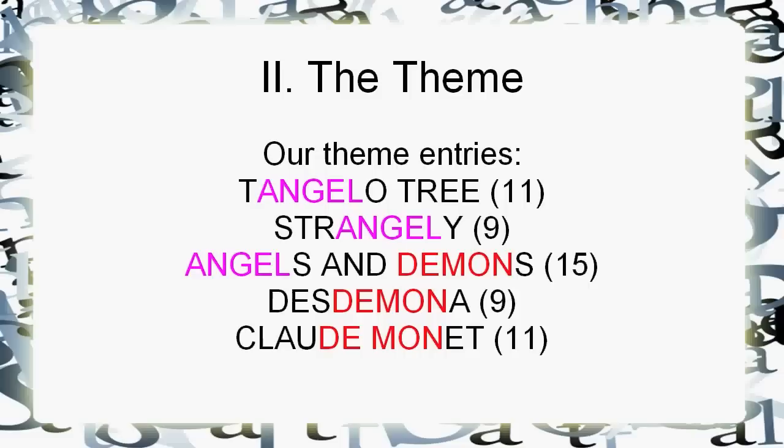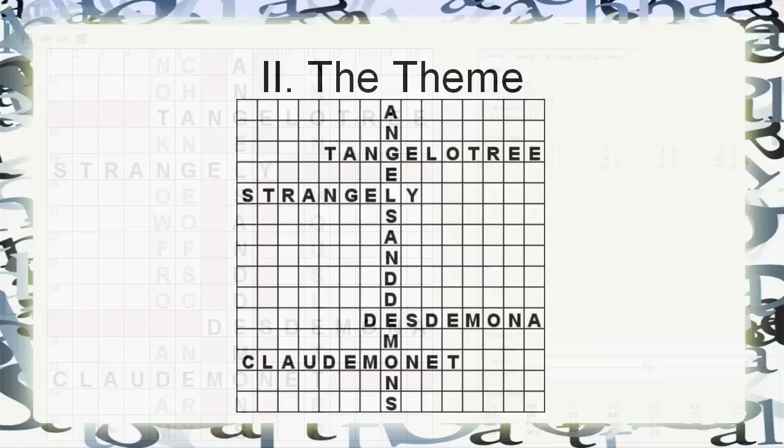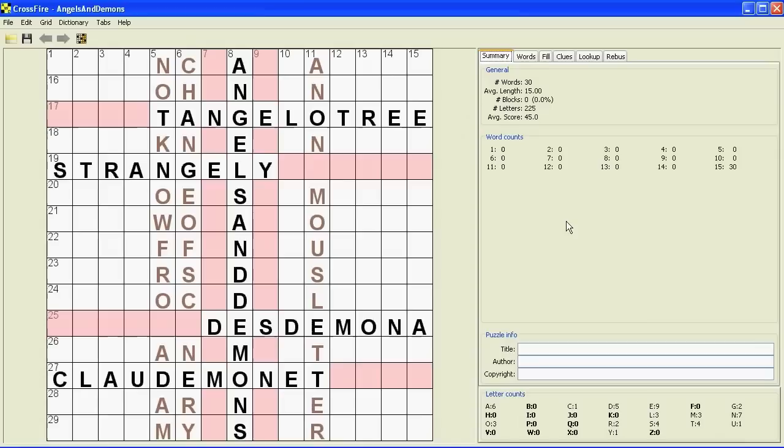We need to find symmetrical entries that are pretty interesting and preferably split across two words. So here's what I'm going to use: Tangelo Tree, Strangely, the defining entry Angels and Demons as the 15-letter center entry to explain what's going on, Desdemona from Othello, and Claude Monet. They split up symmetrically. The defining entry, Angels and Demons, actually crosses the other four entries. It's a risk, but you hope something like that would be pleasing to an editor.